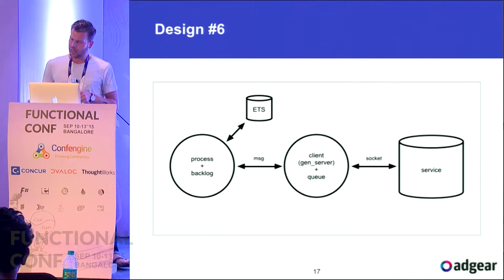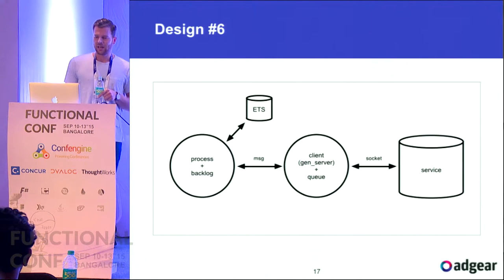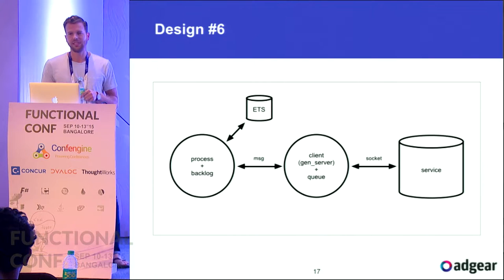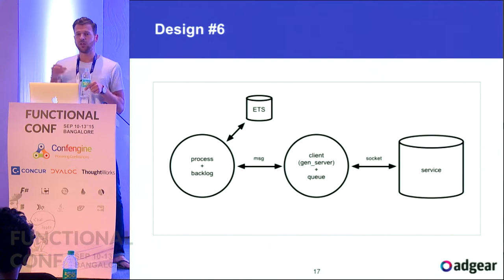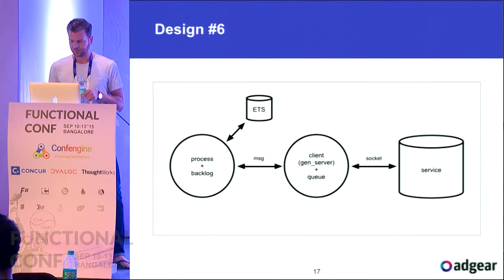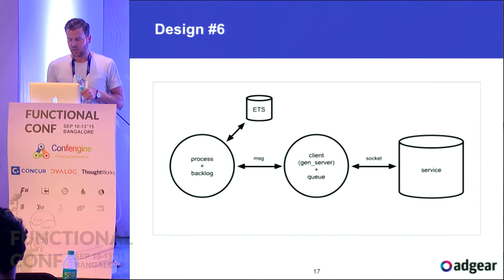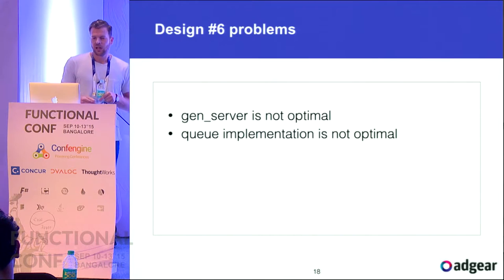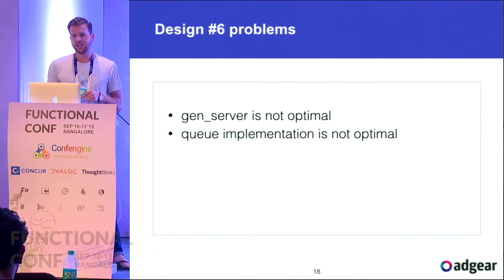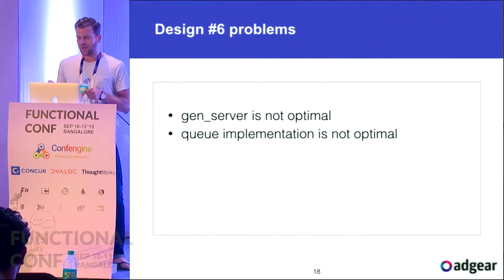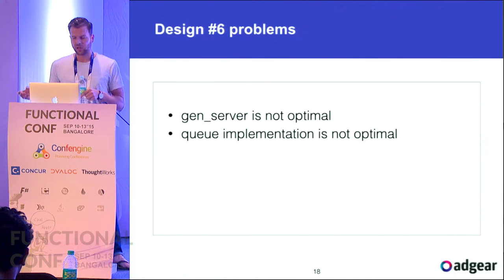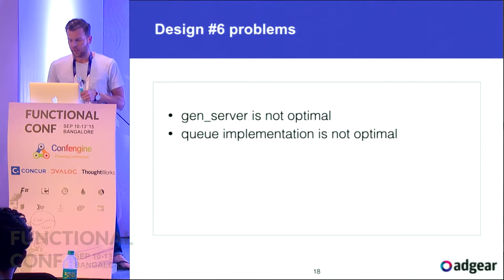The trick once again is to use ETS counters to keep a count of the number of concurrent requests per worker. This design is pretty solid, but for performance reasons we can still improve it. We're using gen_server which offers many functionalities we don't need, with code paths wasting cycles. The queue implementation using the Erlang standard library is also not optimal. To fix that, instead of gen_server we switch to proc_lib, which is what gen_server itself uses to implement itself.